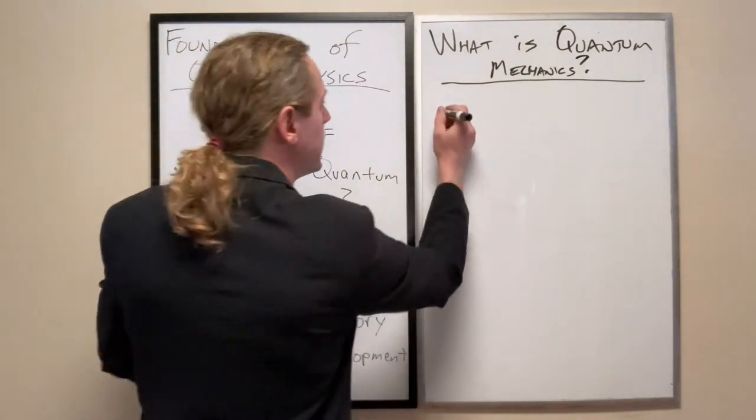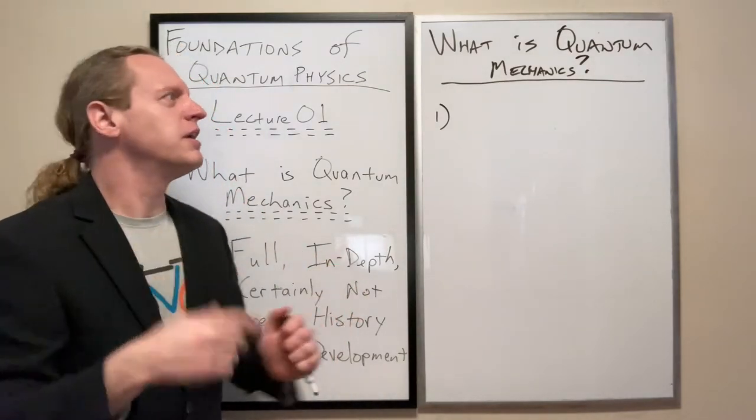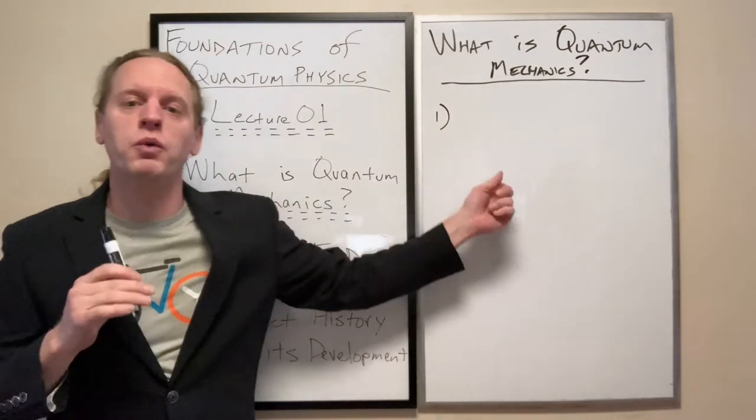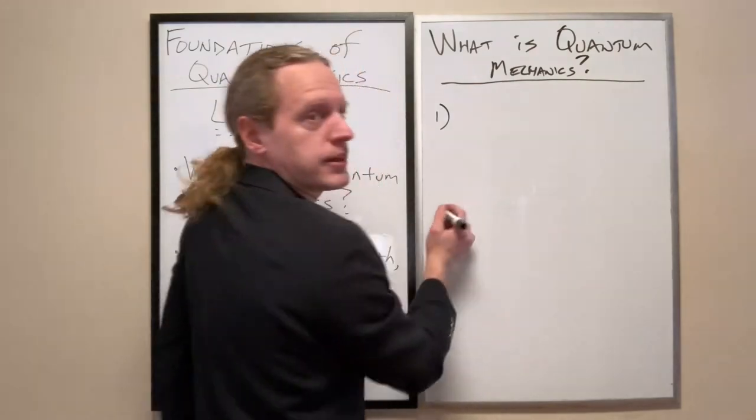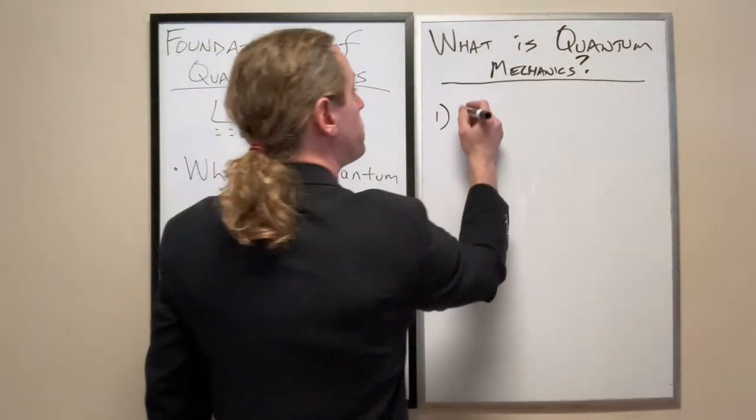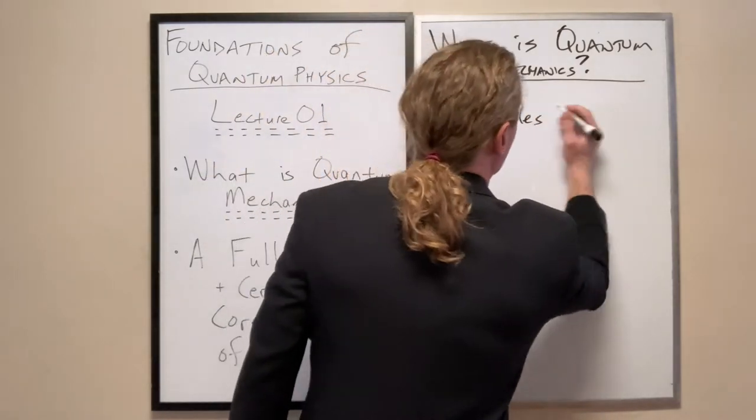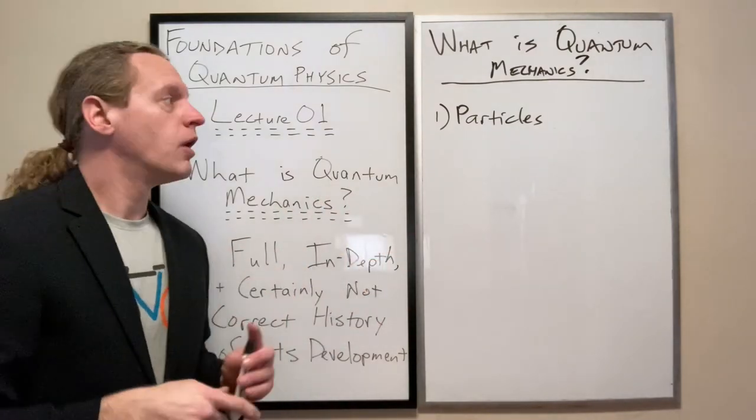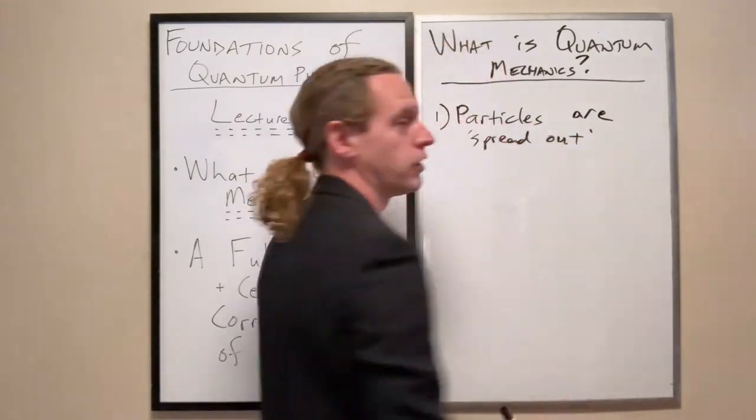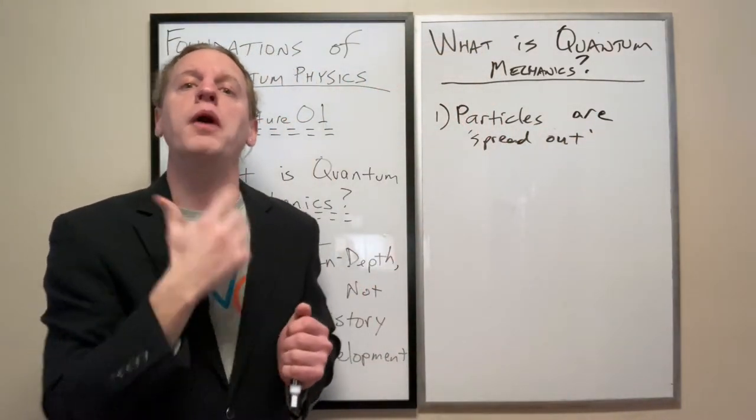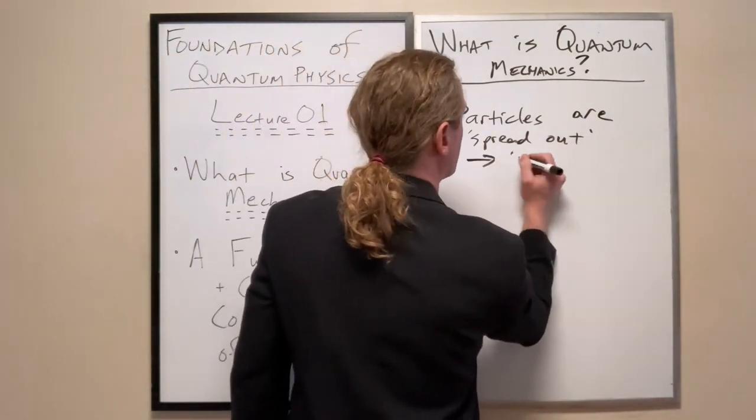So number one, and these are going to feel like they're not going to be that groundbreaking or revolutionary, but the consequences of each one of these bullet points is going to be immense. So number one, we learned that occasionally particles, for example electrons, act like waves or particles are spread out like waves are. So they're no longer that little dot, that little point that we view them as. Non-quantumly particles are spread out or wavelike.